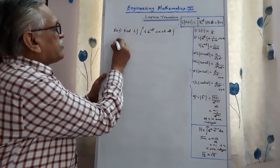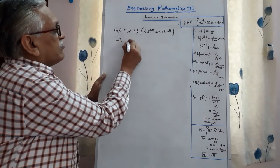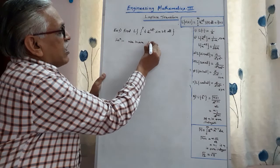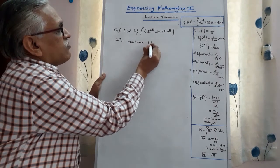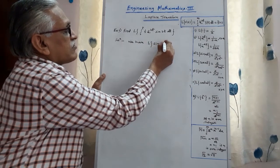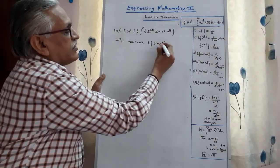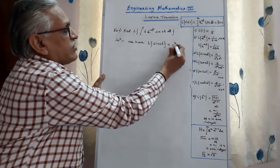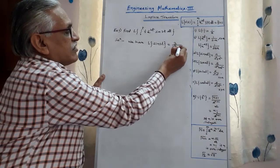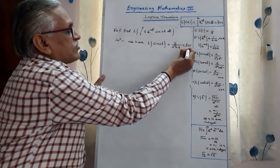Performing step by step: we have the Laplace transform of sin(3t) as the standard result, which is 3 divided by s² + 9. We call this f̄(s).